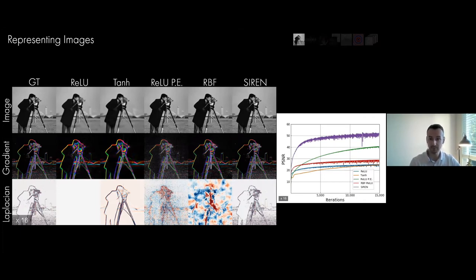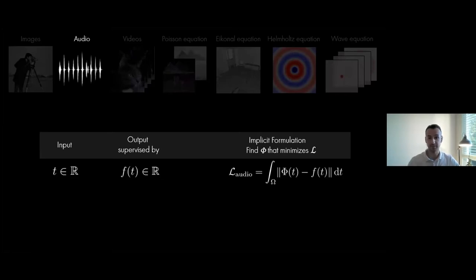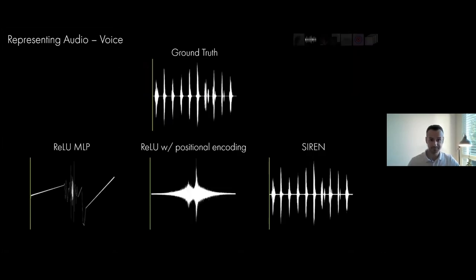To clarify, we're not taking discrete derivatives — we're taking the derivative of the neural network output with respect to its inputs. SIREN is the only network able to faithfully capture gradients and provide accurate second-order derivatives via the Laplacian. Similarly, for audio waveforms — mapping time points t to amplitude f(t) — SIREN is the only architecture able to fit the waveform at all.